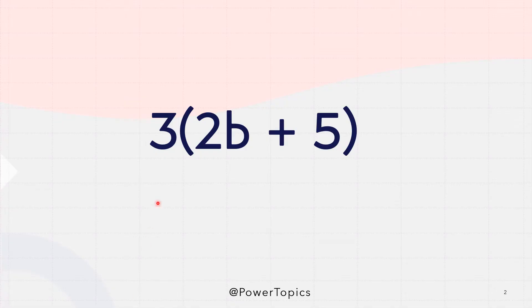We have our first expression here, 3 and in bracket 2b plus 5. Now we cannot plus 2b and 5 together because we don't know the value of b. So we are going to multiply what is outside the bracket with inside the bracket.